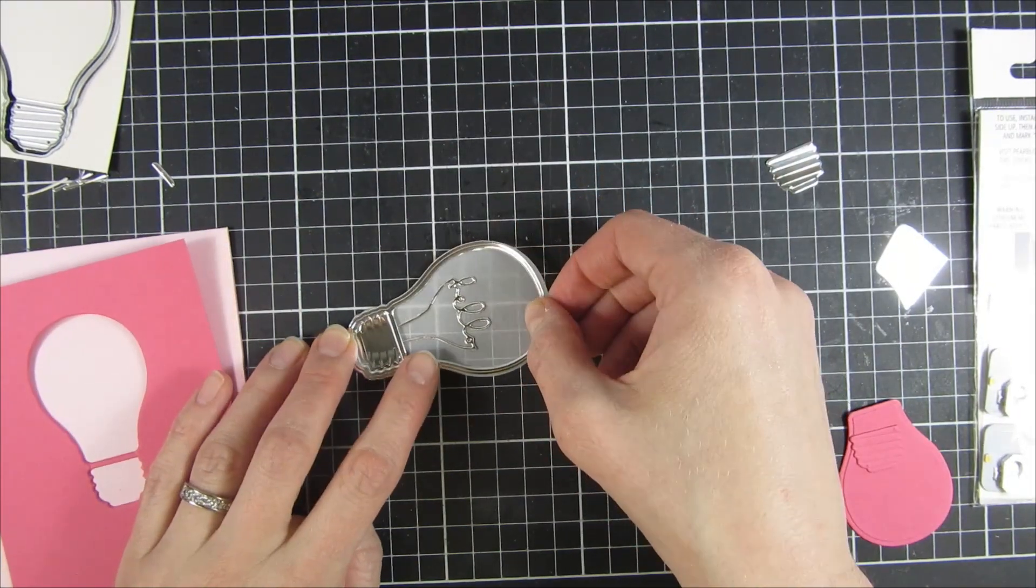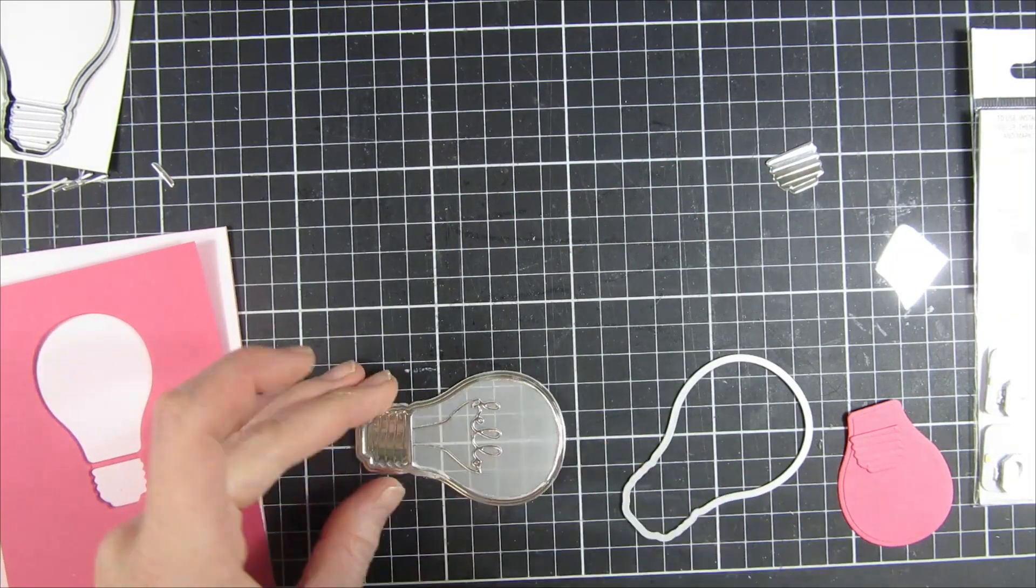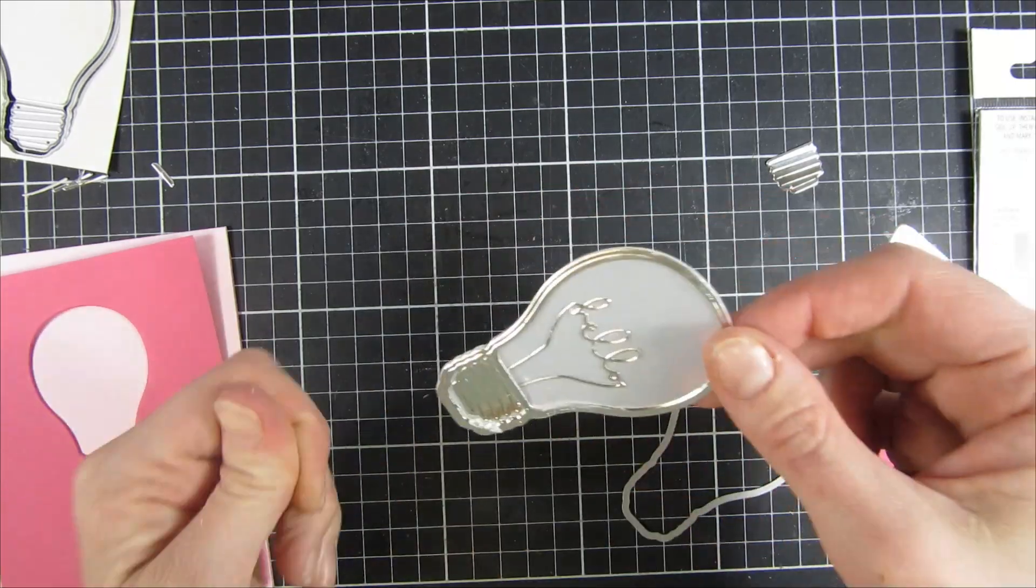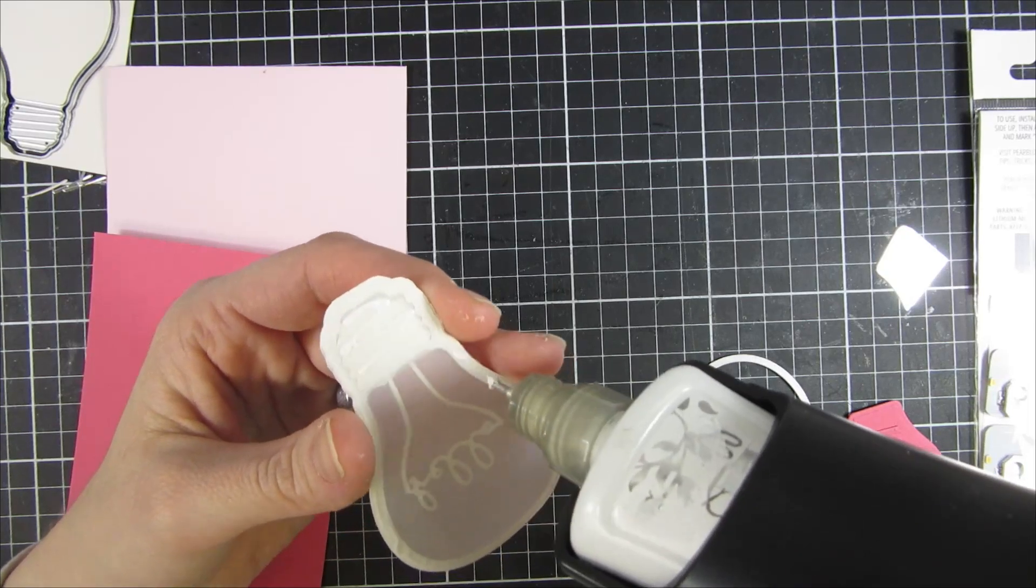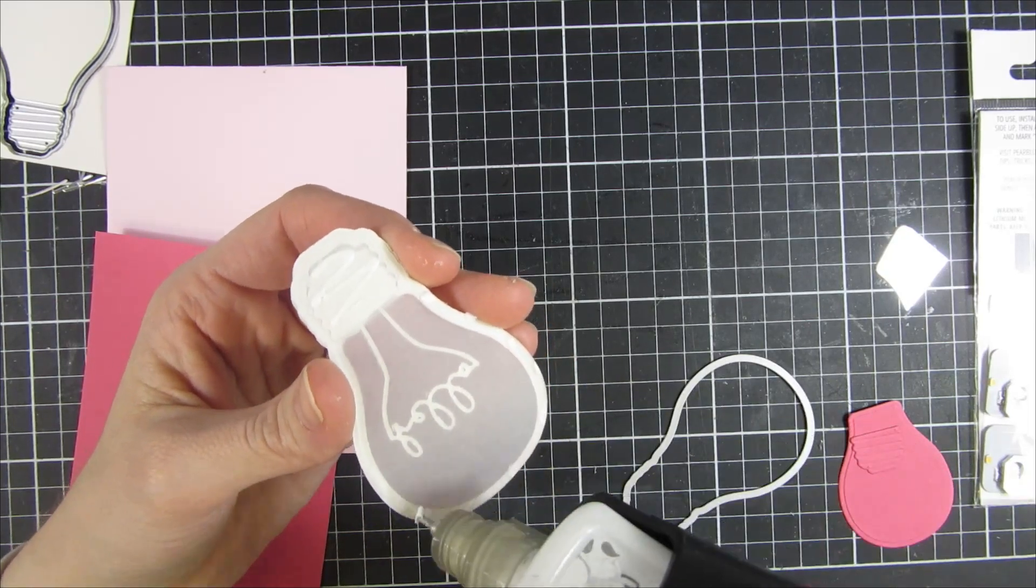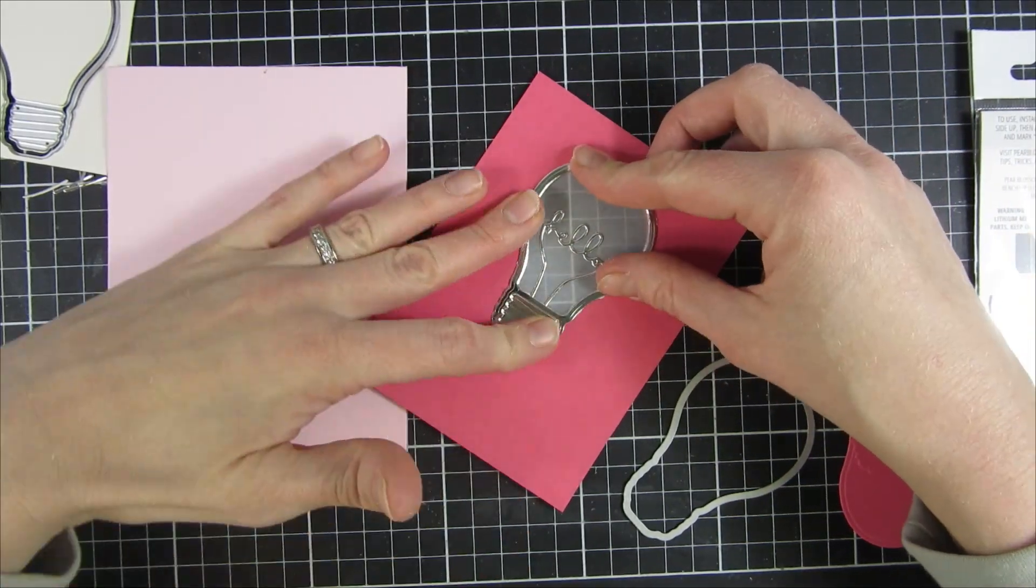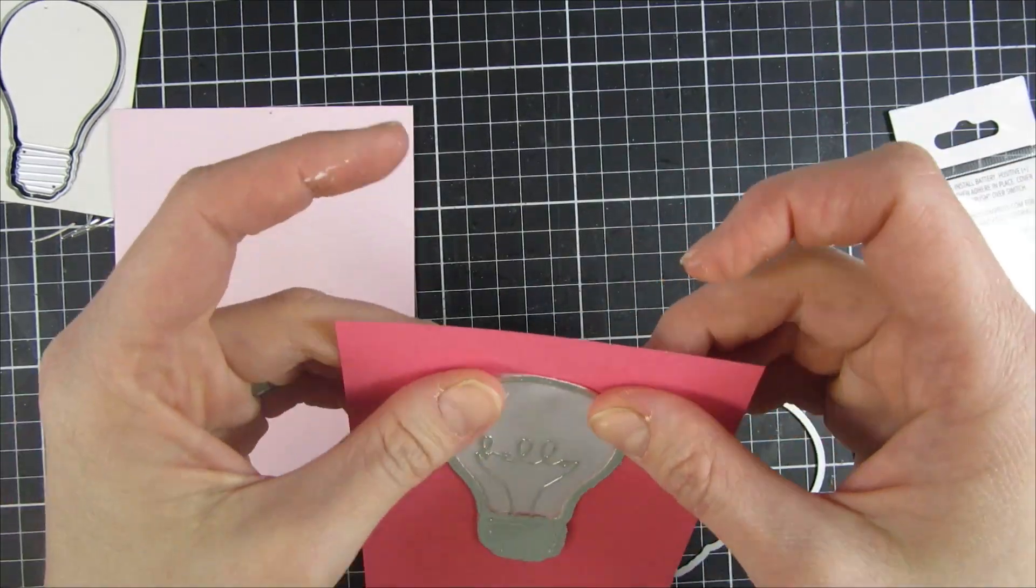You can see here I cut around the vellum piece as well, just to get an outline where I can adhere my piece down. You can see I'm using liquid glue for that, and I have this here so it would lay on top, and we have our frame or light bulb.